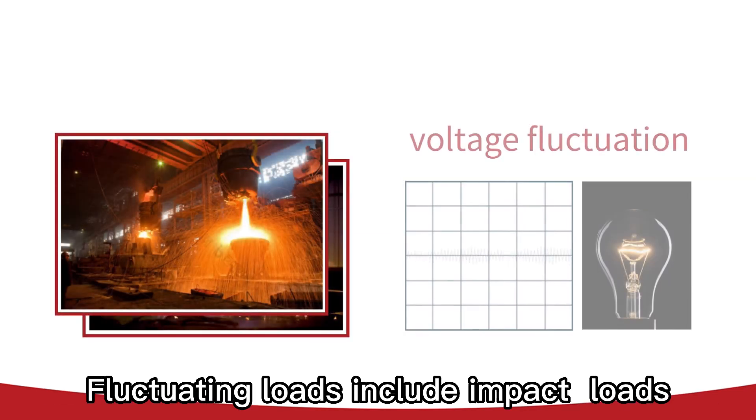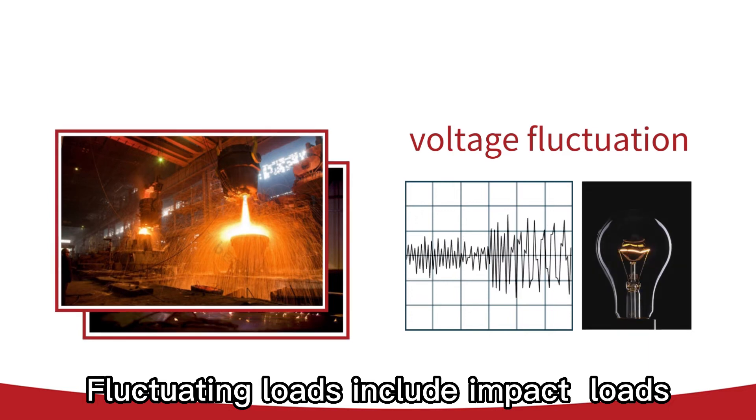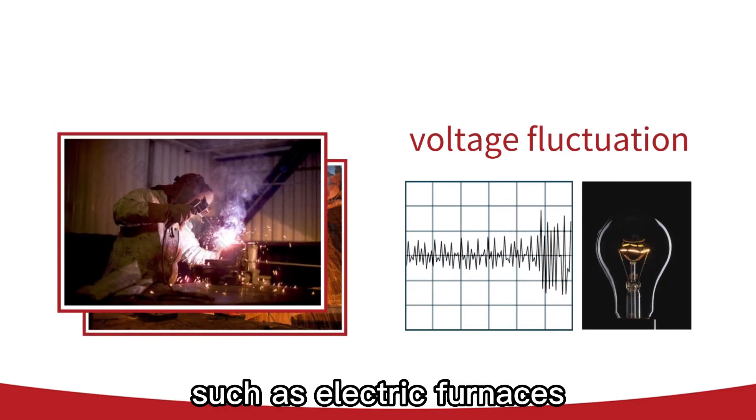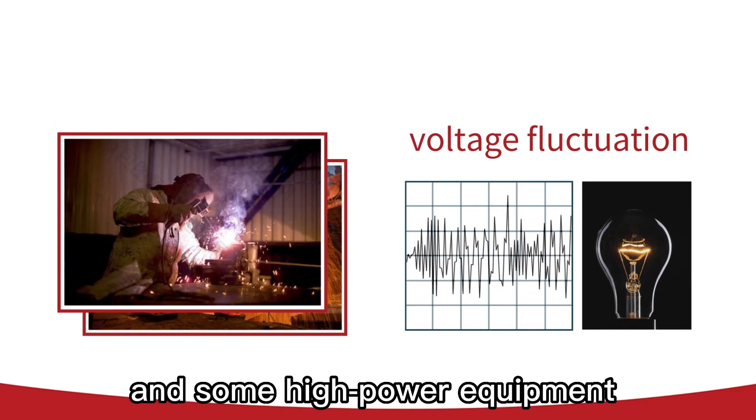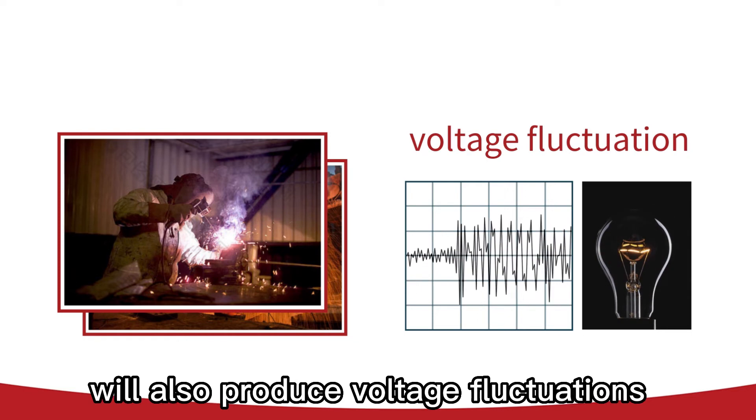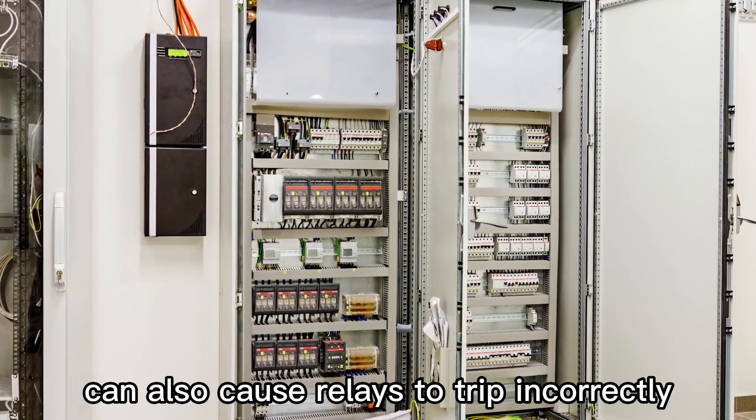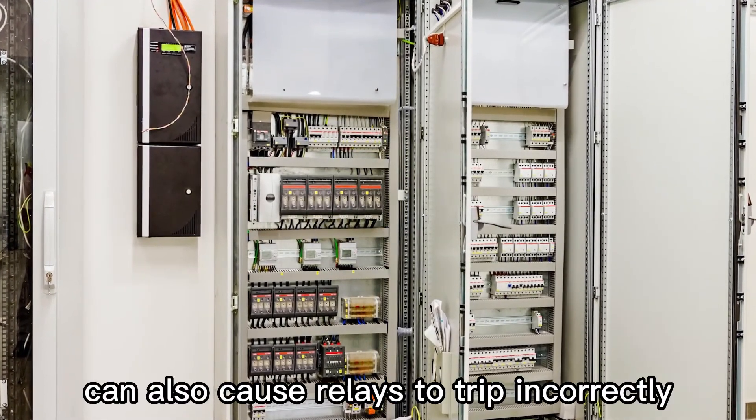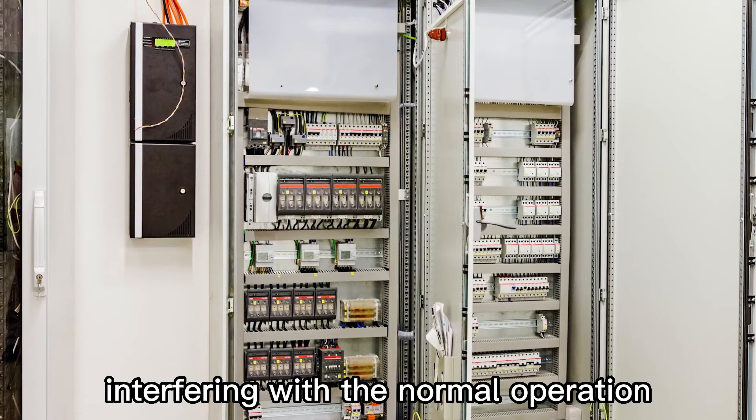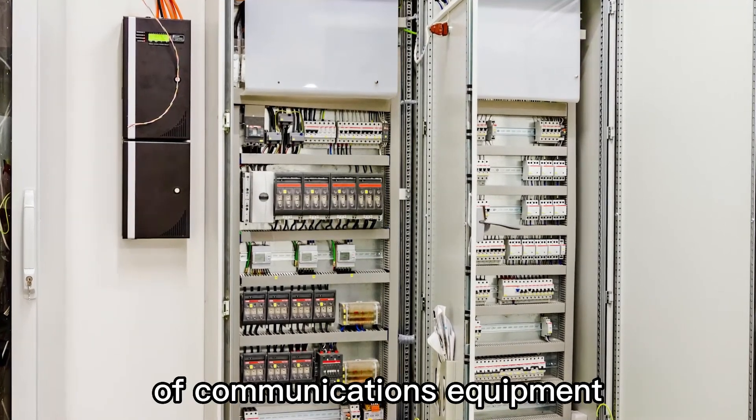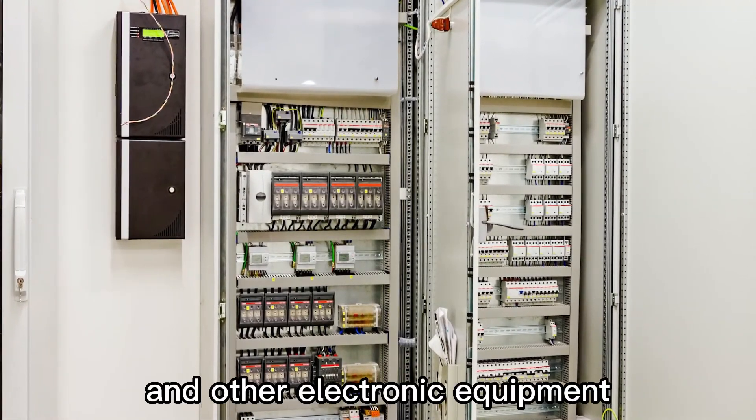Fluctuating loads include impact loads such as electric furnaces and electric welding machines. And some high-power equipment will also produce voltage fluctuations when switching. Voltage fluctuations can also cause relays to trip incorrectly, interfering with the normal operation of communications equipment and other electronic equipment.